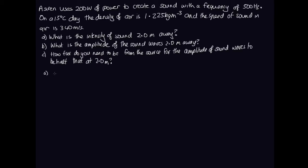To answer Part A, we need to calculate the intensity using the formula: intensity equals power over area. In this case the waves are traveling out in three dimensions, so the power is 200 watts and the area is 4πr². The question didn't specifically say three dimensions, but that's our natural assumption for a siren. Substituting in: 200 over 4π times 2² gives us 3.98 watts per meter squared.